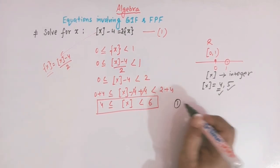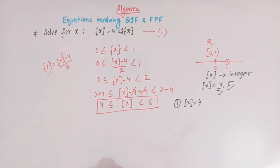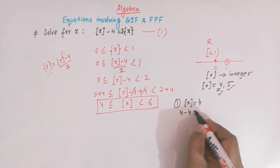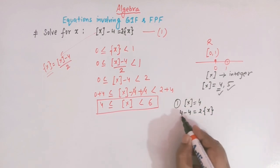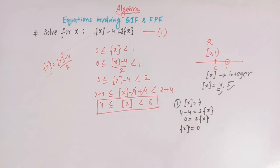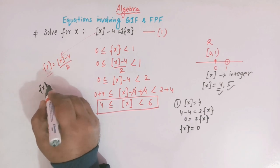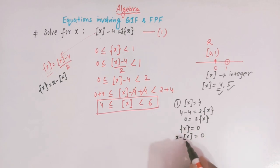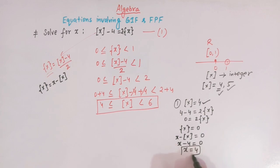Taking the greatest integer of x equal to 4 and substituting into equation 1: 4 minus 4 equals 2 times the fractional part of x, giving 0 equals 2 times the fractional part of x, so the fractional part of x equals 0. Using the definition fractional part of x equals x minus the greatest integer of x, we get x minus 4 equals 0, so x equals 4.